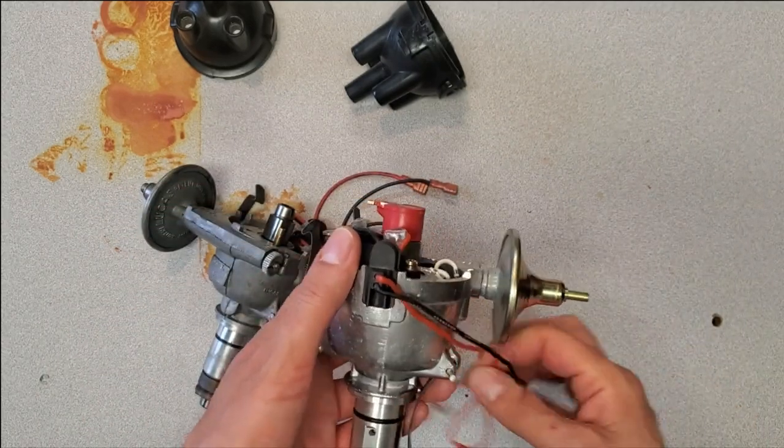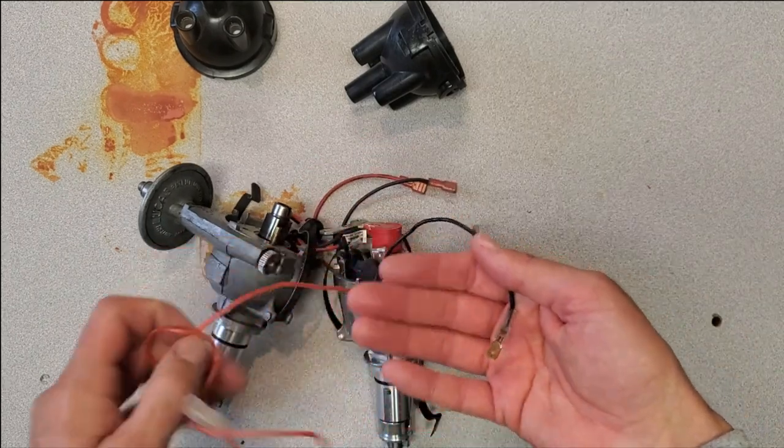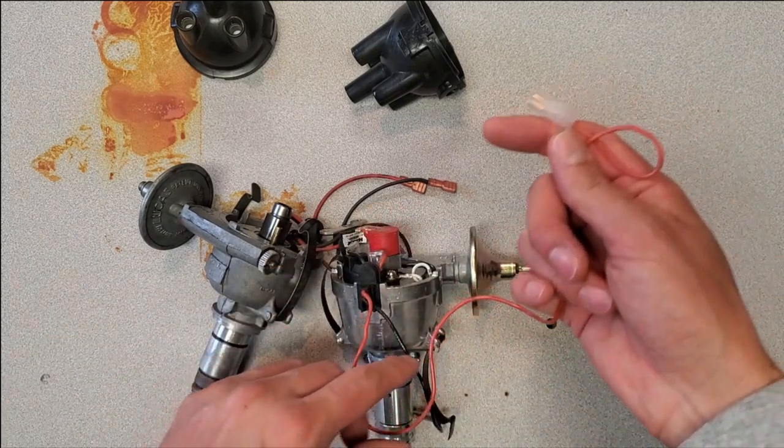They also come pre-wired for connections to work right in the harness. The short black one here connects straight into the original points connection on the harness, and then you have to run this longer one out to the coil to provide the module with power.